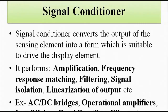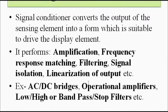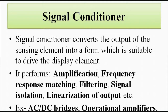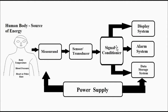Examples of signal conditioners include AC or DC bridges, operational amplifiers, and low-pass, high-pass, bandpass, or bandstop filters. This signal conditioner block consists of amplifiers, filters, and can also contain power amplifiers — all constituting one block.